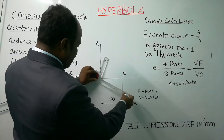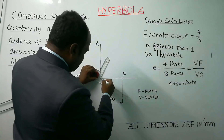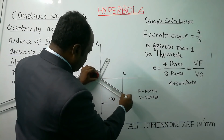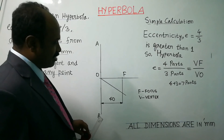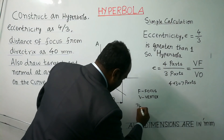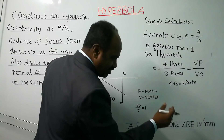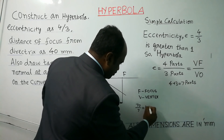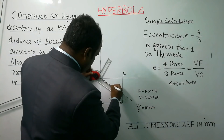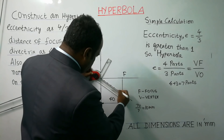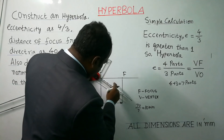Draw one inclined line of any length at any angle using your drafter scale. On this inclined line, mark 7 equal parts. Take the distance as 70 mm, so 70 divided by 7 parts means each division will be 10 mm. Mark points 1, 2, 3, 4, 5, 6, 7 on the inclined line.